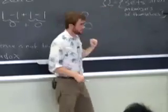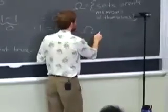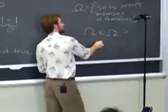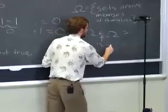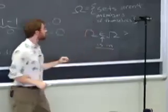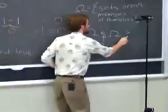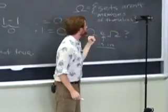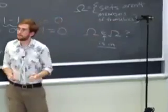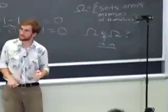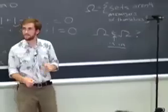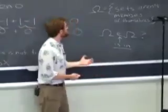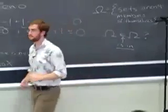So, we have a bunch of things in here which are sets which aren't members of themselves. And then we ask the question, is omega an element of itself? Well, if omega contains itself, but omega by definition only contains things which don't contain themselves, so it can't contain itself. Well, if it can't contain itself, it doesn't contain itself, and that means it should contain itself. Contradiction.